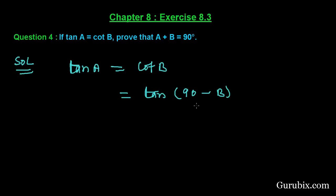Here we have B. Here we have tan A. This tan and tan can be cancelled. We have A equals 90 minus B.